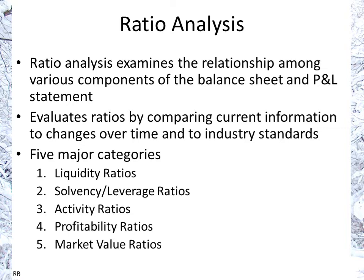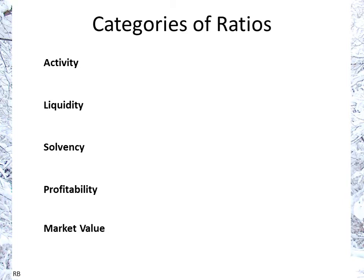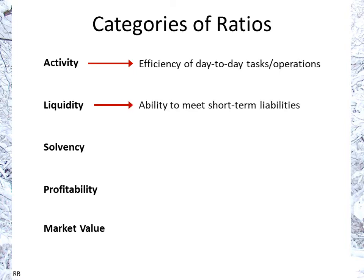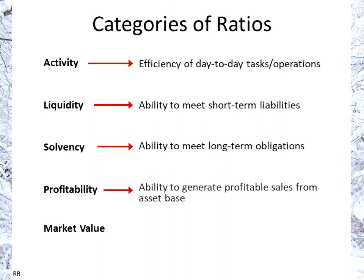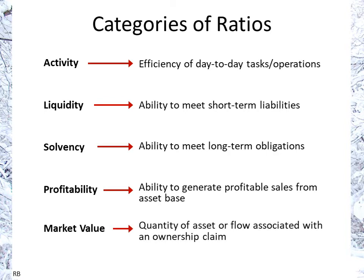There are five major categories: liquidity, solvency or leverage, activity or efficiency, profitability, and market value ratios. Activity ratios measure the efficiency of day-to-day tasks. Liquidity ratios measure the ability to meet short-term financial obligations. Solvency ratios address long-term obligations. Profitability is the ability to generate profitable sales from an asset base and from the volume of sales. Market value ratios relate to the value from an ownership or owner's share point of view.